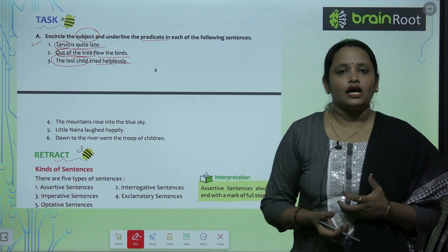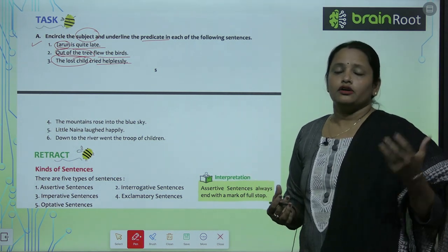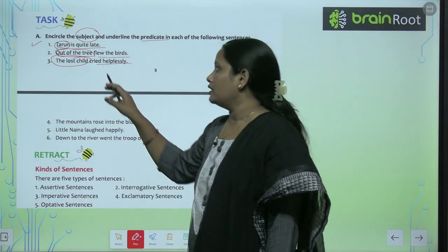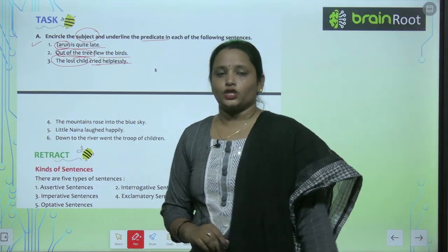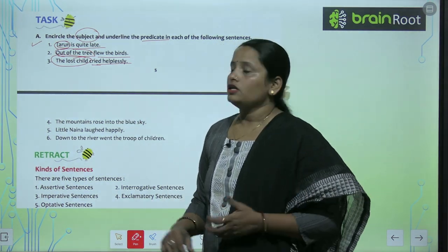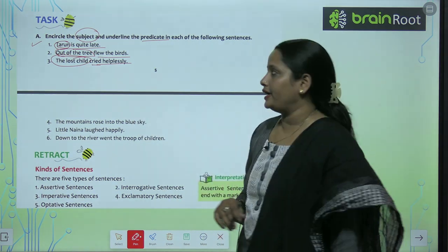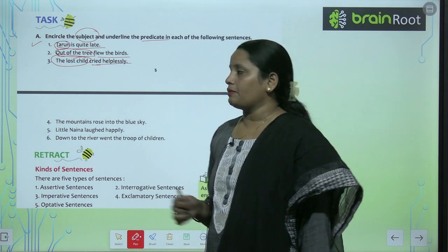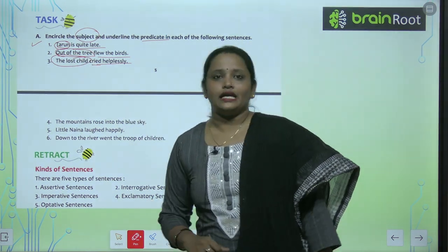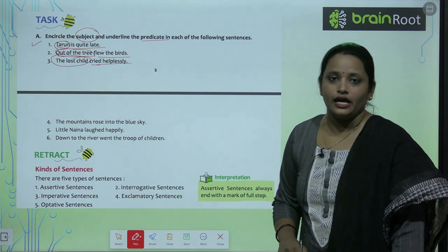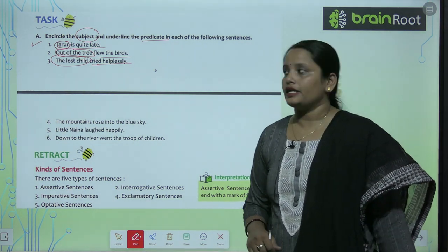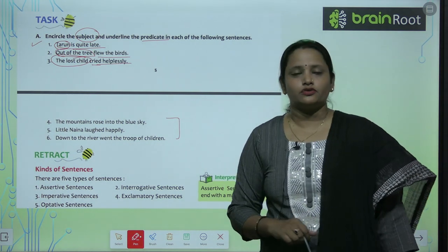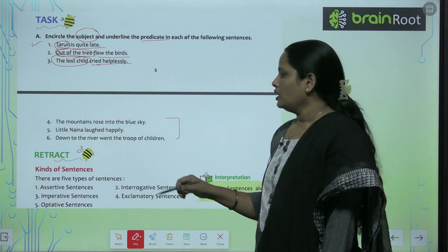Children, ek baat pe dhyan dena — jab bhi predicate dekhte hain, predicate ke saath hamesha verb aapko milegi. Jaisa yaha predicate mein 'cried' ek verb hai. Verb always comes in the predicate. Similarly, children, try to do the remaining three questions on your own.